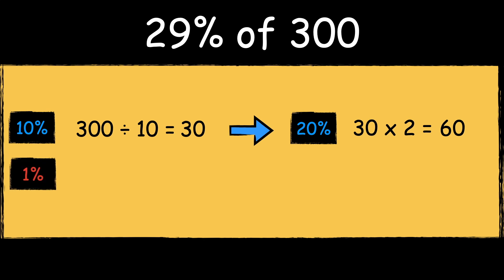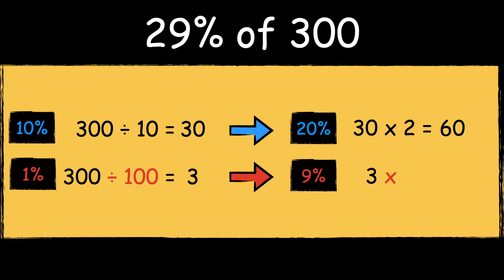Next we need to find 1% of 300. To find 1% of a number we divide it by 100. 300 divided by 100 is 3. We can then multiply the answer by 9 to find 9%. 3 times 9 equals 27.